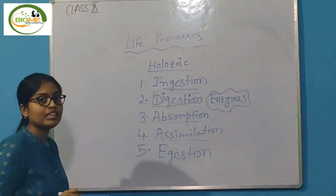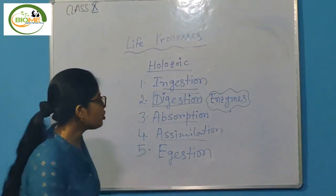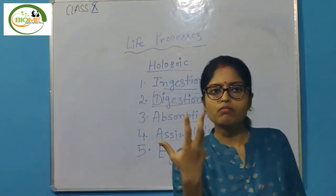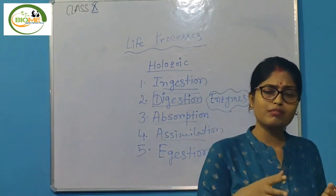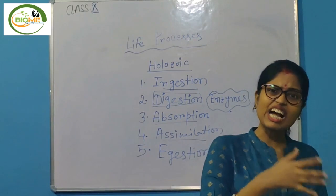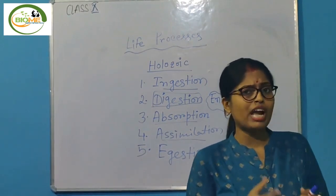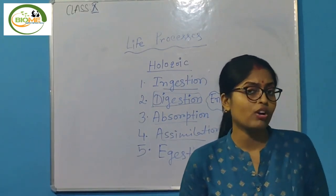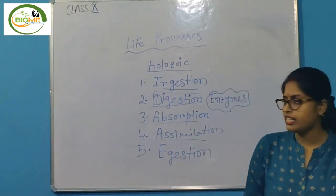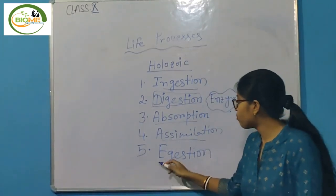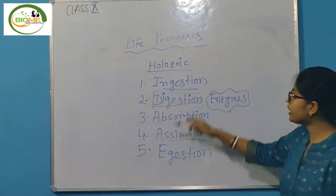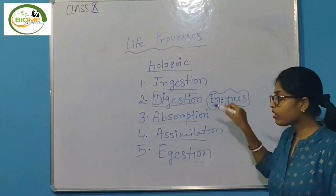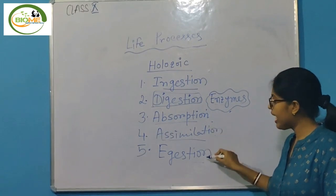Step five is egestion. During this process, waste products are also produced. Some parts remain undigested by the organism's body. Those undigested things remaining in the body are harmful, so they must be eliminated. By the process of egestion the waste comes out. So in holozoic nutrition the five steps are: ingestion, digestion, absorption, assimilation, and egestion.